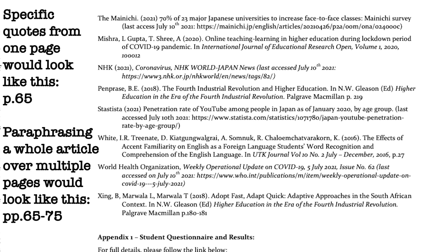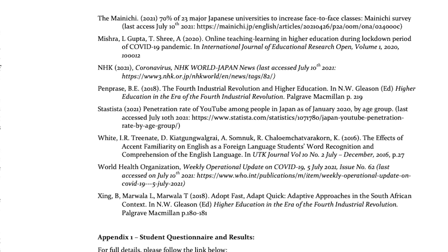Lastly, put down the page number. If you're quoting a specific passage from the research, note the page it comes from — for example, page 56. If you're paraphrasing or explaining the entire article, use 'pp.' followed by the page range, such as pages 57 to 67. Page numbers are very important. If it's an online newspaper or magazine there may not be page numbers, but if published in a journal, including page numbers is essential.